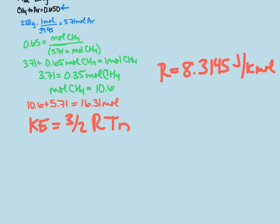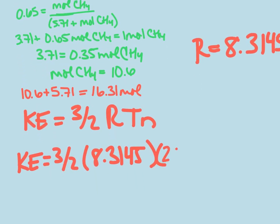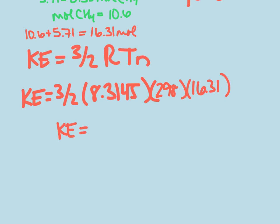So, when we substitute our values in, we have that our kinetic energy equals 3 halves times 8.3145 times our temperature, which we calculated is 298 Kelvin, times the number of moles, which we just solved for, which is 16.31. And so, we get that we have a kinetic energy of 60,617 joules, which we can make 60.6 kilojoules.